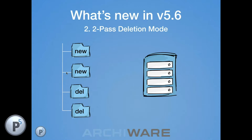Two-pass delete mode fixes this by doing two passes: the first pass performs all deletions to make space, ignoring new folders; the second pass copies the new data across. The default remains single pass, but enabling two-pass delete is great for customers running close to the storage capacity limit on their target.